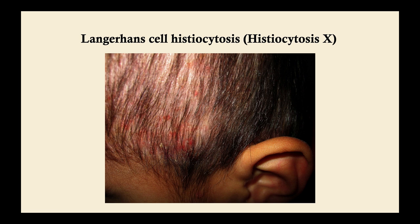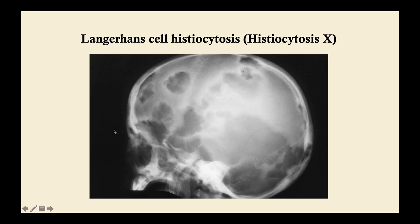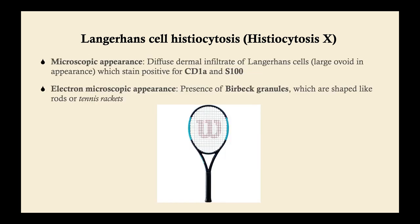If you're given a picture of this scaly rash along with lytic bone lesions of the skull, you know you're dealing with LCH, because seborrheic dermatitis would never cause that. The skull lytic lesions are not very different from what you'd see in an adult with multiple myeloma. On light microscopy, you'll see a diffuse dermal infiltrate of Langerhans cells — large and ovoid in appearance. They can be difficult to distinguish because a large eosinophilic infiltrate can obscure them.